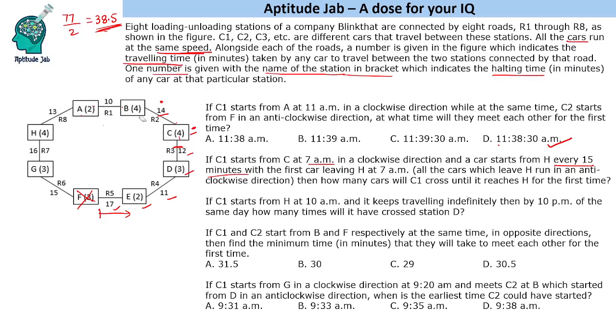A car starts from C at 7 AM and it has to reach H and every 15 minutes, there is a car starting from H. Let's find out how much time does C take to reach H: 12, 15, 26, 28, 45, 48, 63, 66, 82 minutes. So it takes 82 minutes.